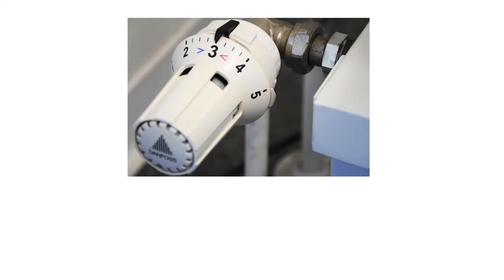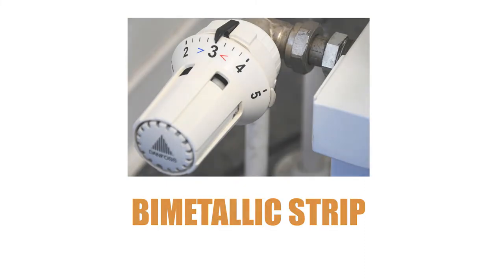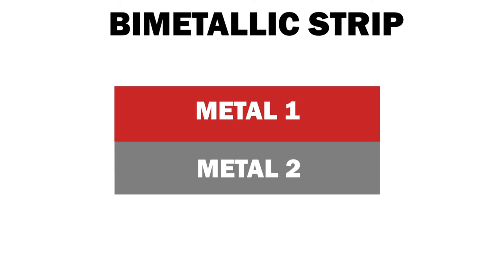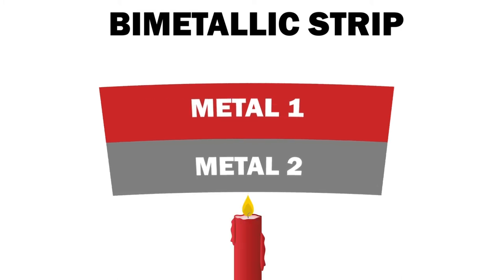The thermostat in an iron generally uses a bimetallic strip. As the name implies, a bimetallic strip consists of two different types of metal, with different coefficients of expansion, that are bonded together. In the presence of heat, they expand differently.